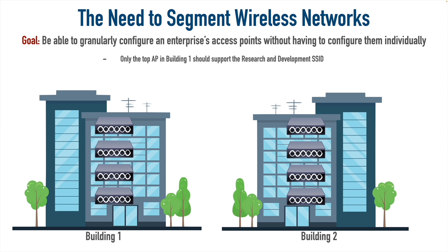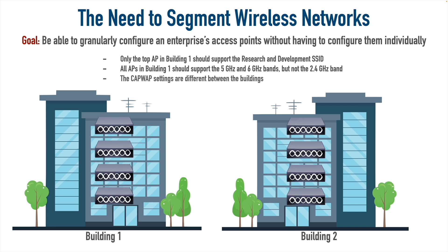For example, let's say in these two buildings, only that top access point in building one should be advertising the SSID for the research and development department — the other seven access points should not. Maybe all access points in building one should support the five and six gigahertz bands but not the 2.4 GHz band, while all three bands should be supported in building two. And let's say our CAPWAP settings, like different timers, differ between buildings.